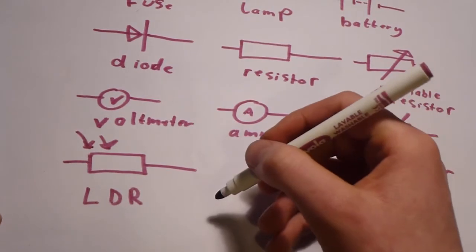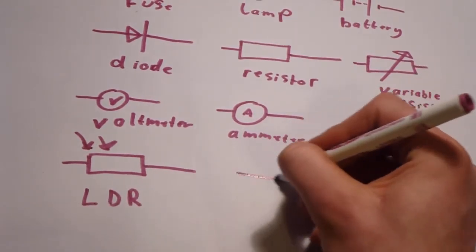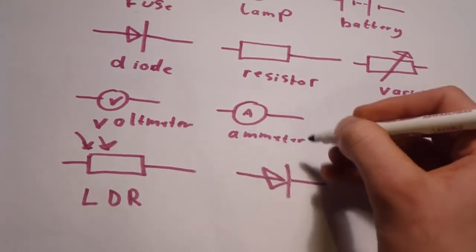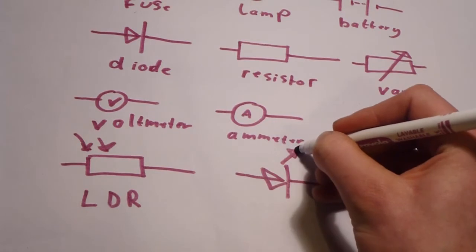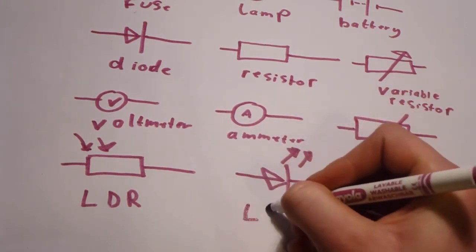After that, we have an LED, which is a light-emitting diode. It's the same as a diode - only lets current flow in one direction - but has arrows coming out as it emits light.